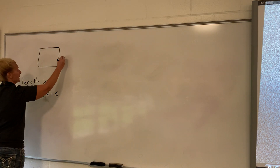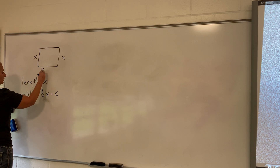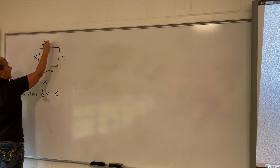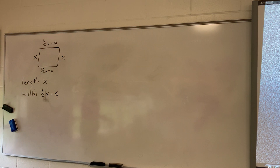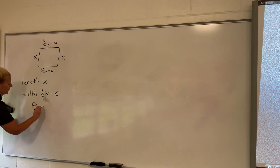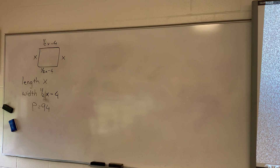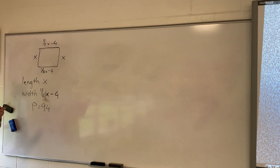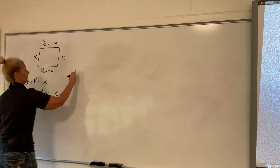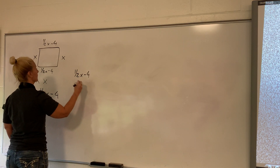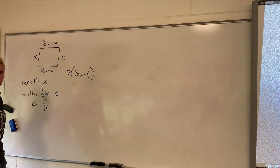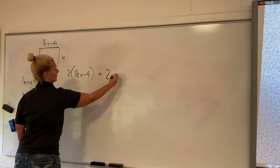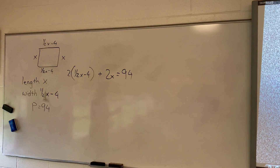So if I look at my picture, I'm going to call this my length and this my width. Y'all need to learn to draw a picture. So I have my perimeter and it wants me to find the area, so all of this is related to perimeter. What do you know about perimeter? It's the sum of all the sides. So it would be one half x minus four, times two — because I have two of those — plus two x equals 94.